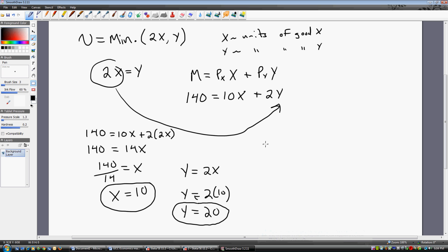To figure out the exact utility of this consumer, plug in 10 for X and plug in 20 for Y. So utility is going to be the minimum of 2 times 10, which is 20, or 20. So this consumer has utility of 20. And that's how you maximize utility with fixed proportions.